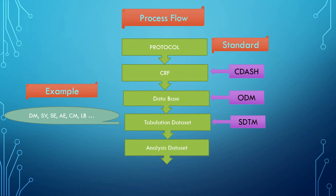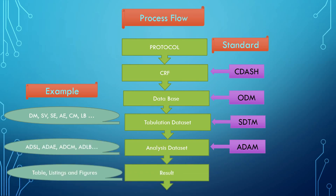Once the SDTM dataset is ready, we can move to the next step: creating or developing the analysis dataset or ADaM dataset. ADaM datasets are developed based on the ADaM standard and implementation guide, and they are created by considering our final results — that is, tables, listings, and figures. Some examples of ADaM datasets are ADSL, ADAE, ADCM, ADLB, etc. These datasets also get validated by double programming and Pinnacle 21 check.